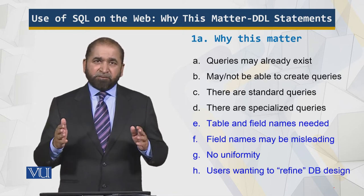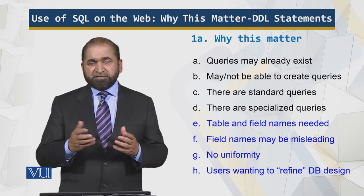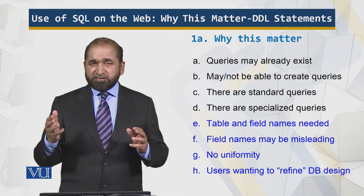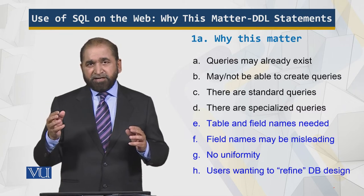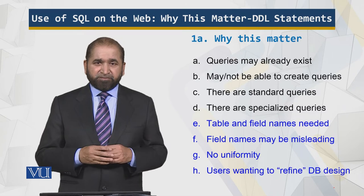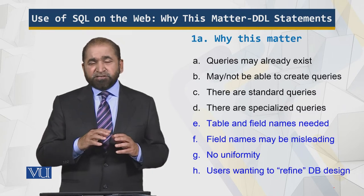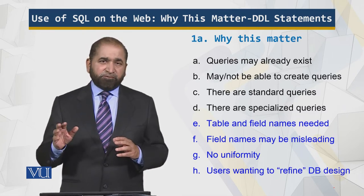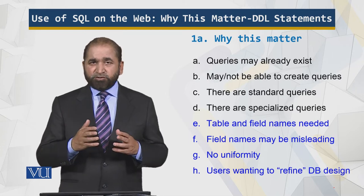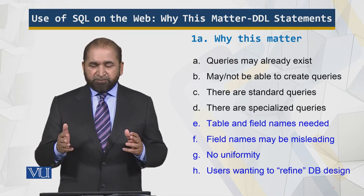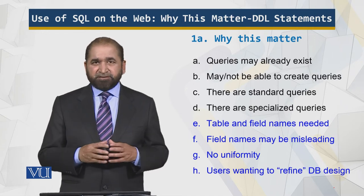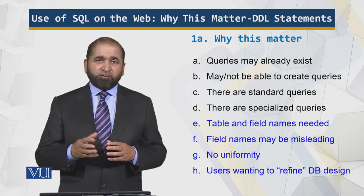Field names may be misleading. For example, two tables may have the same field name but different meanings. You cannot conclude that because field names are the same their meanings are also the same — that may not be true. There is no uniformity, especially if you are new, and users are wanting to refine the database you have designed.